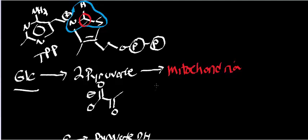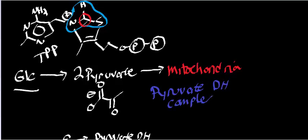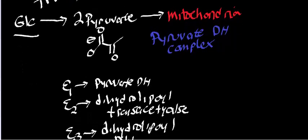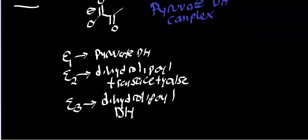Inside the mitochondria, pyruvate is going to meet up with an enzyme complex called the pyruvate dehydrogenase complex. It is a complex of three enzymes, each with a very different catalytic activity. They are abbreviated E1, E2, and E3, and the numbers correspond to the order in which catalysis occurs.